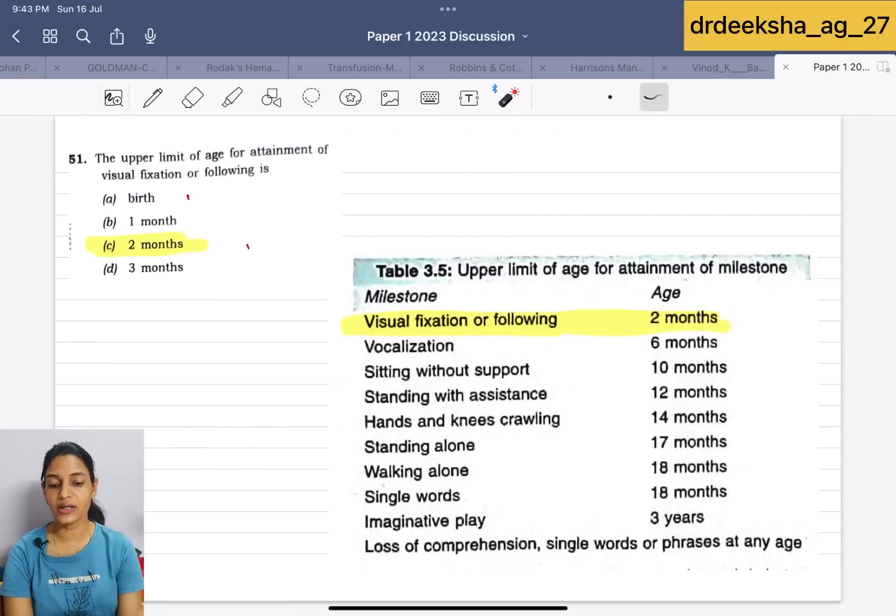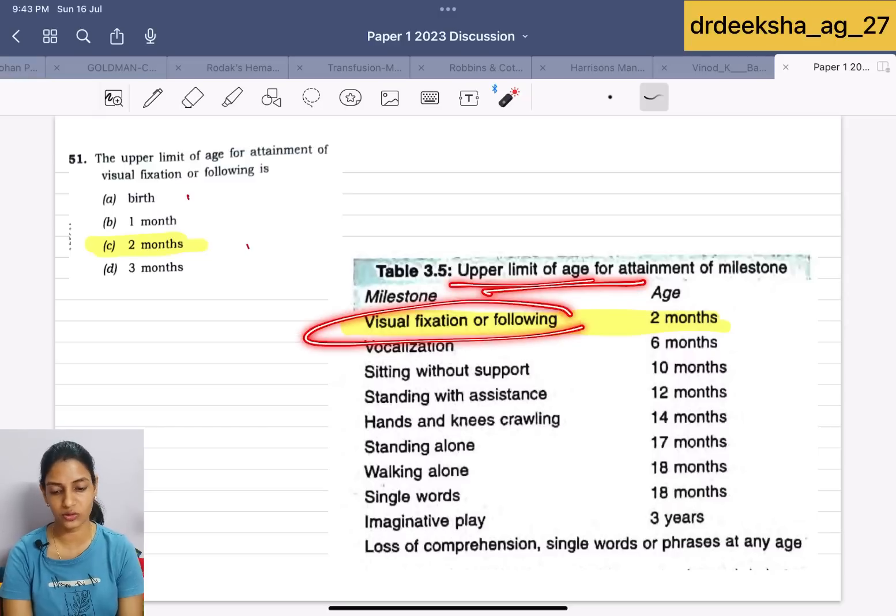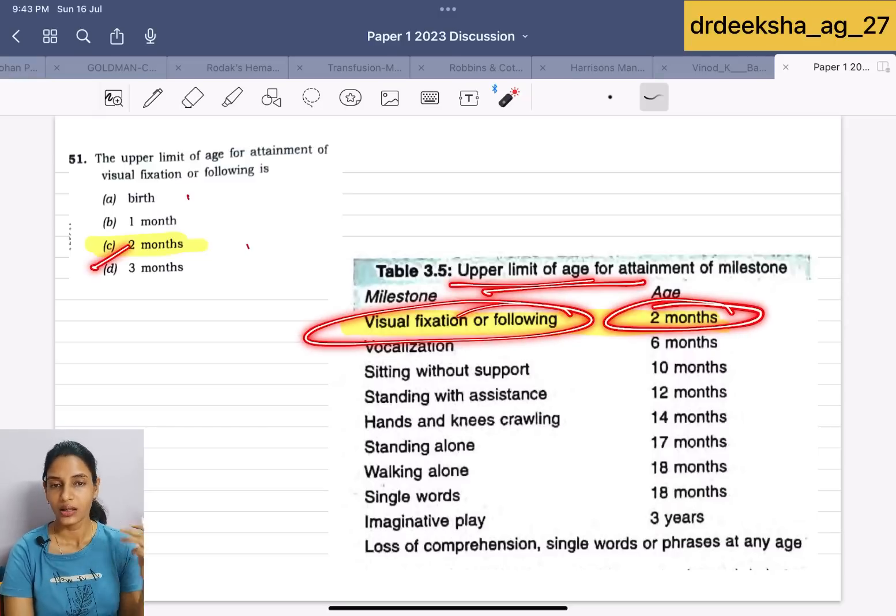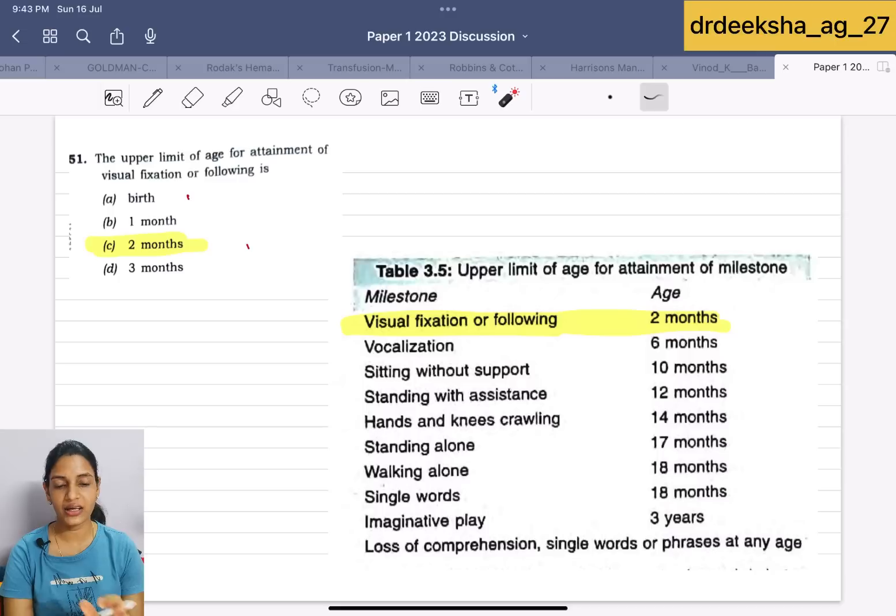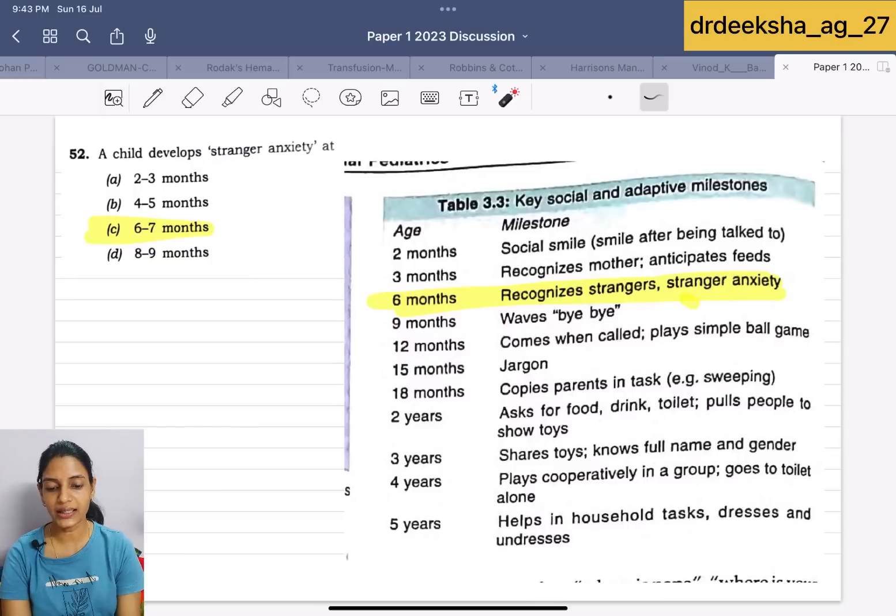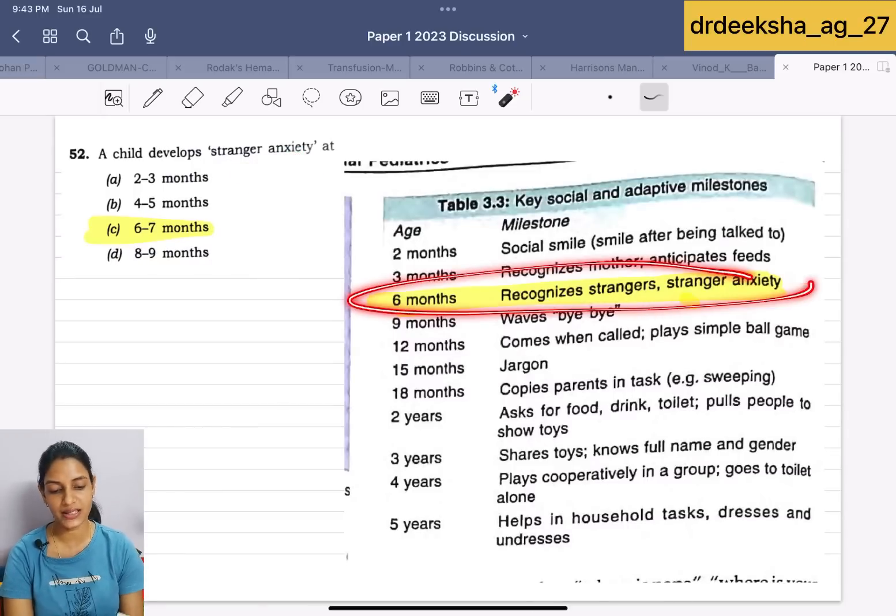Next question is what is the upper limit of age for the attainment of visual fixation of the following? Upper limit age for the visual fixation is 2 months. Answer for this is 2 months. The medicine questions, I have taken the reference from Harrison and Davidson and for the pediatrics, I have taken the reference from the Ghai. This image is from the Ghai. Next is child develops stranger anxiety at the age of 6 months. Answer for this is 6 months.